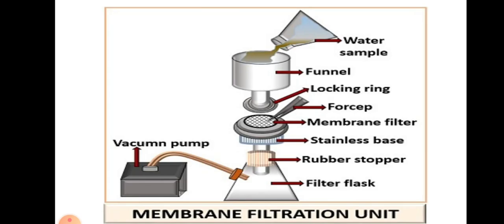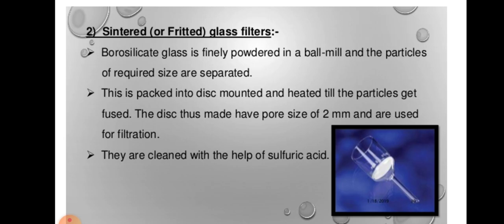Picture of membrane filtration unit: the unit consists of a vacuum pump, a filter flask, rubber stopper, stainless steel base above which the membrane filter is placed with the help of forceps, a locking ring and a funnel through which the water sample can be added. Sintered or fritted glass filters: borosilicate glass is finely powdered in a ball mill and particles of required size are separated. These are packed into a disc, mounted and heated till the particles fuse. The disc may have a pore size of 2 mm and is used for filtration. They are cleaned with sulphuric acid.